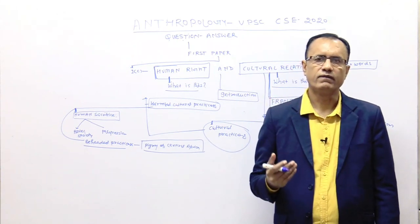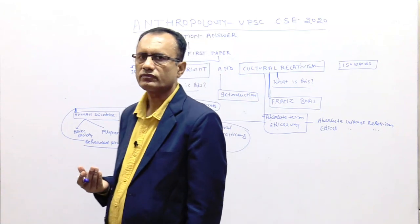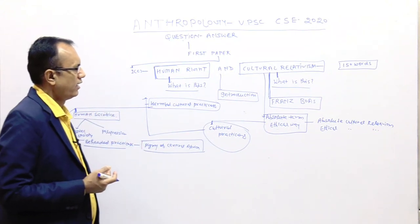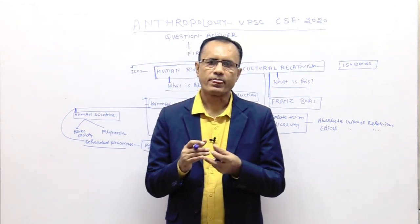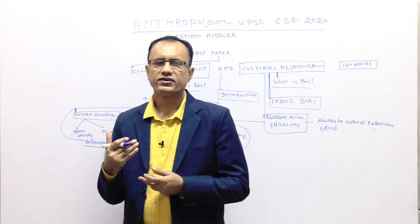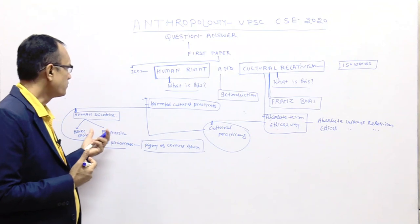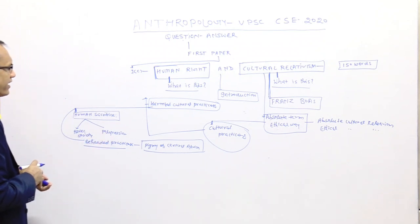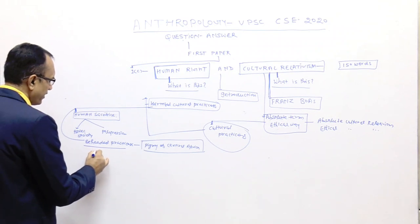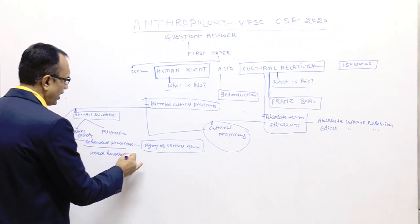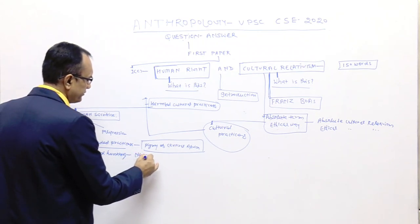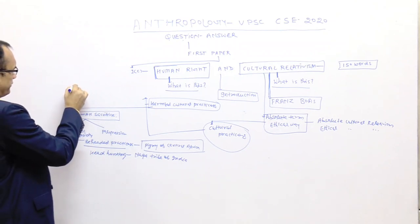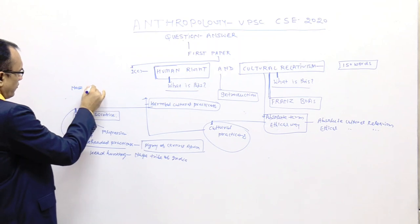When you are going to write your answer, you have to give proper examples or case studies. Human sacrifice is found in Aztec and Polynesian societies. Beheading practice is found among Pygmies of Central Africa. Head hunting is found in the Naga tribe of India. Nose-cutting practices are found among Plains Indians.